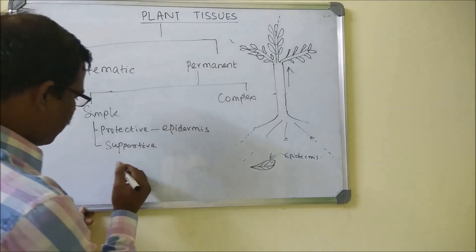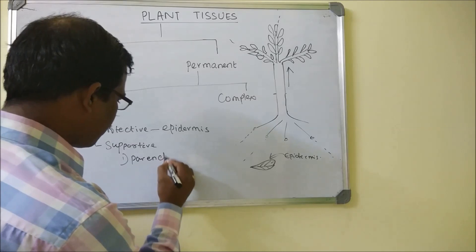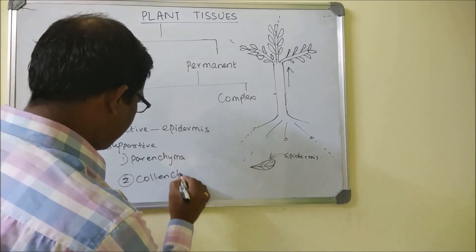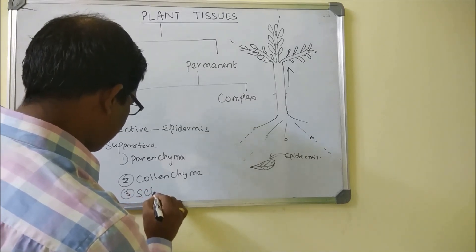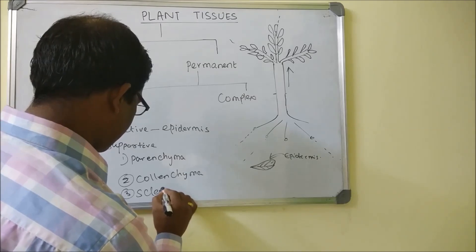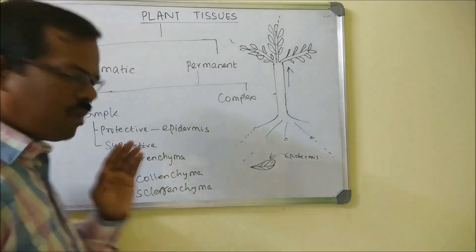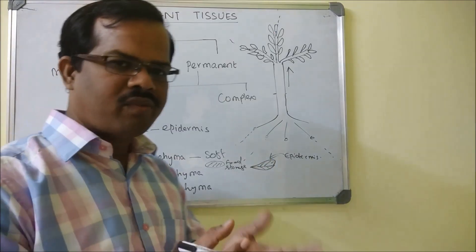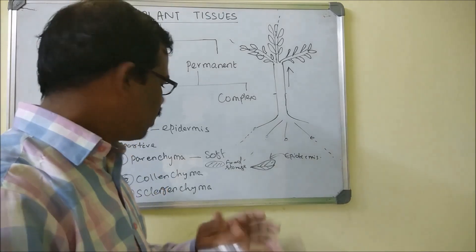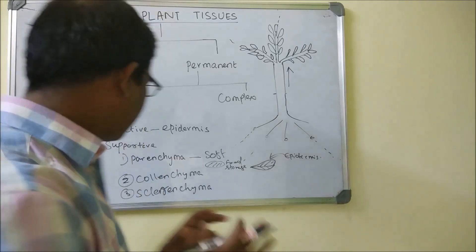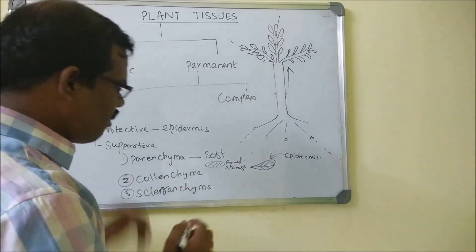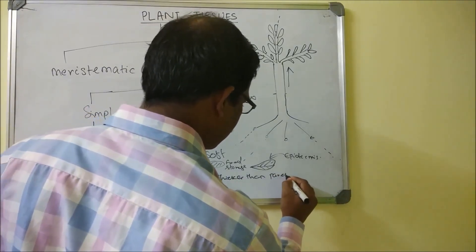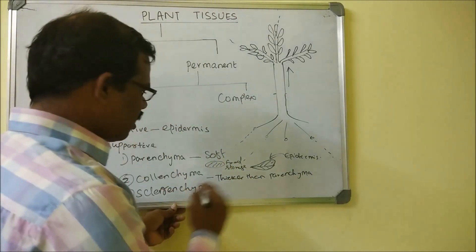Supportive tissues are divided into three categories: parenchyma, collenchyma, and sclerenchyma. The inner part of potatoes, vegetables, or fruits like apples — which is pretty soft — is made up of parenchyma tissue. Collenchyma is a little bit thicker than parenchyma and is used for support.